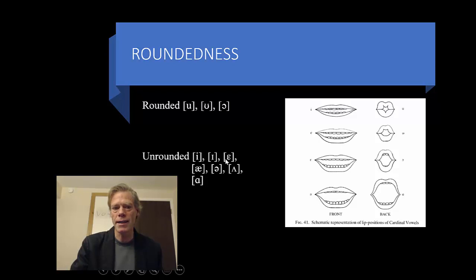Then our unrounded vowels are E, I, E, AH, AH, AH.